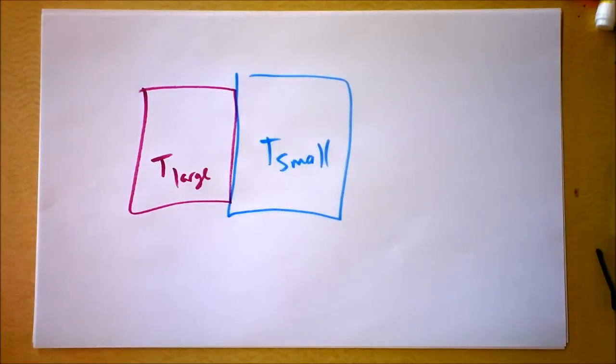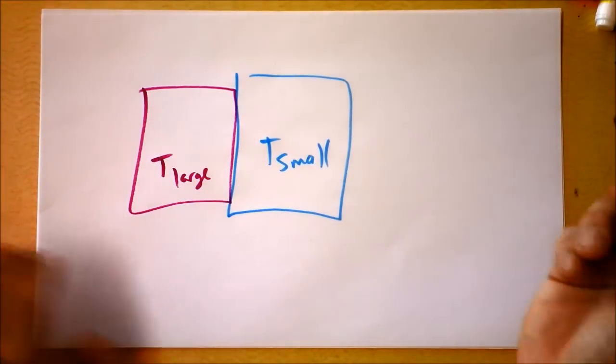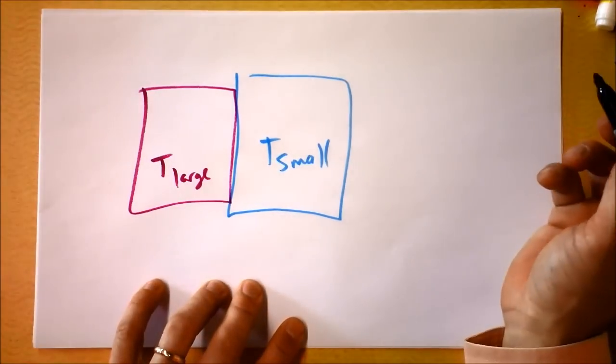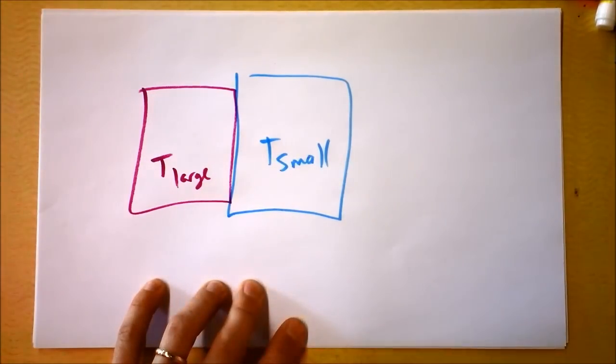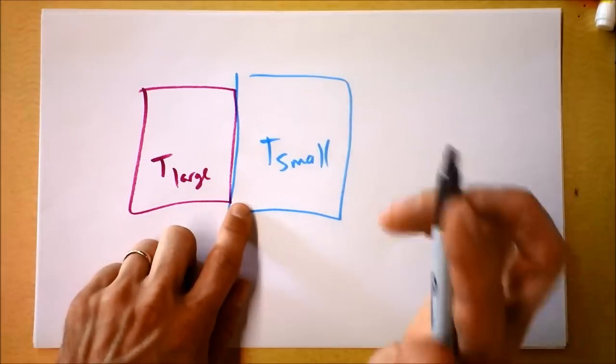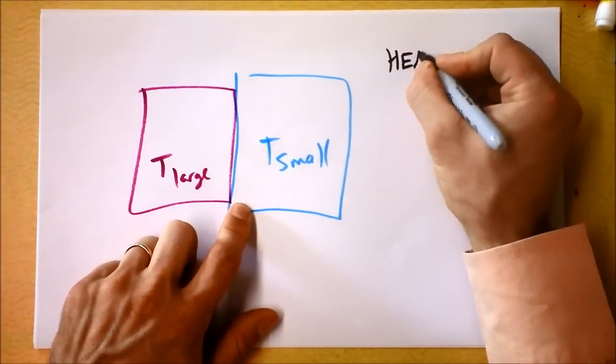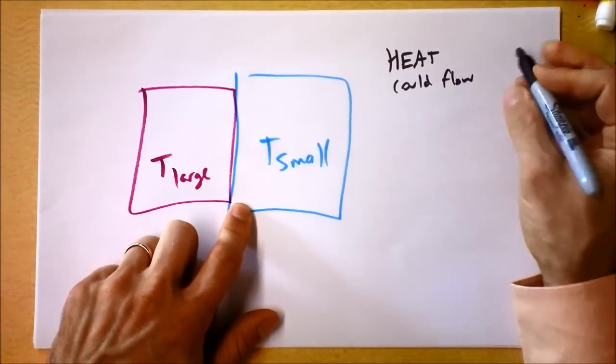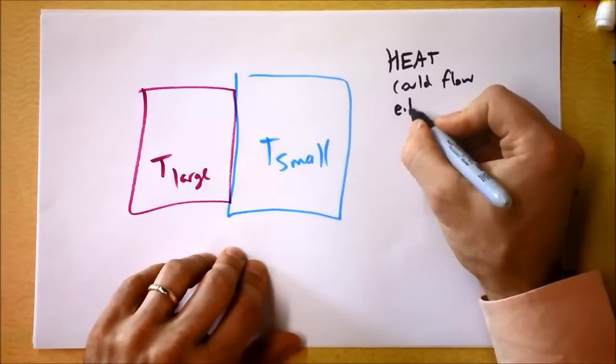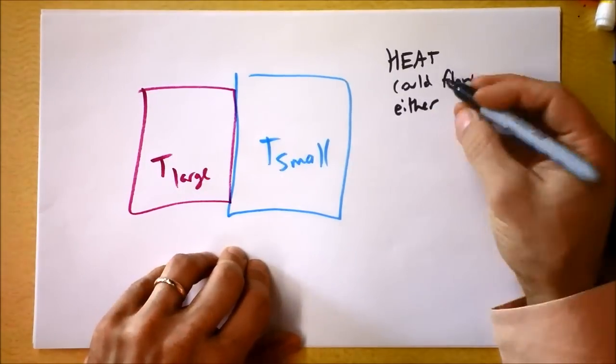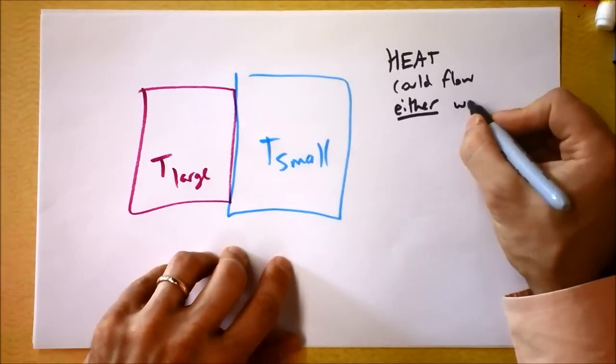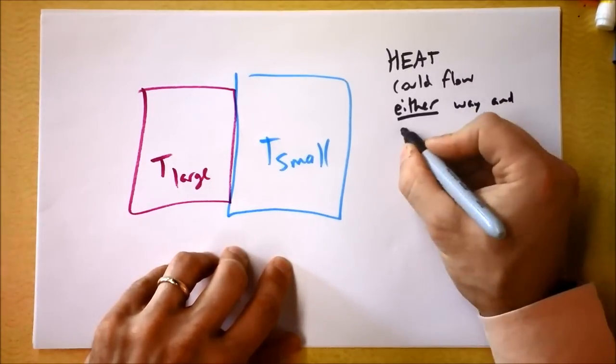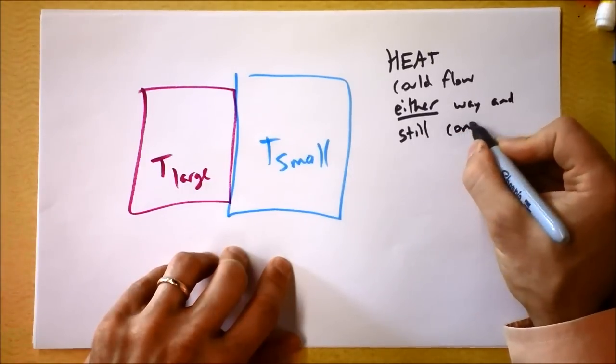They might say, what's going to happen? Is heat going to flow? And you would say, yeah, of course heat's going to flow. And they'd say, which way? Because all they know is that energy must be conserved. So heat could flow either way to conserve energy. In fact, it doesn't even need to flow. But it could flow either way and still conserve energy.